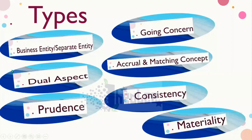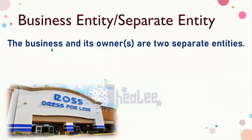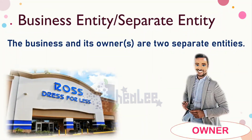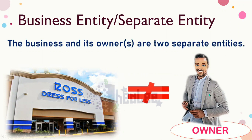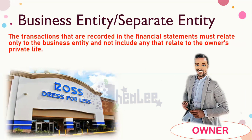Let us zoom into the different types of accounting concepts, beginning with the business entity concept. This concept sees the business and its owners as two separate entities — the business is seen as separate from the owner and must be treated as a legal person in its own right. Whatever transactions took place in the business do not relate to what the owner does in his personal life.